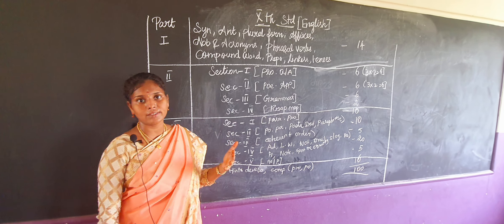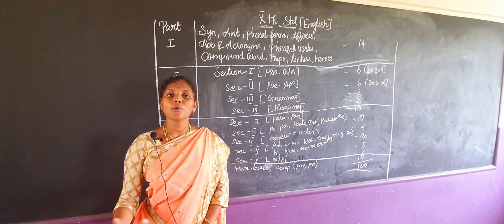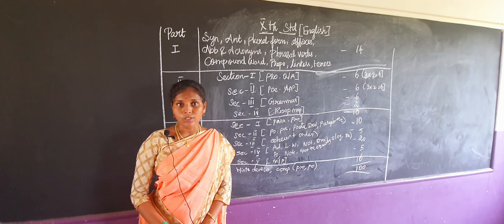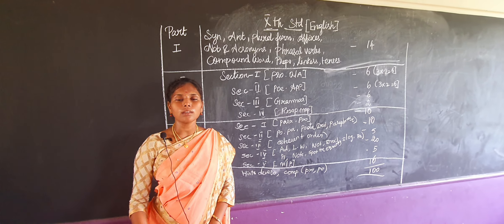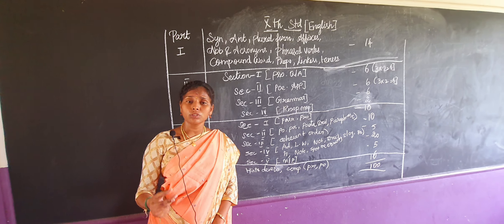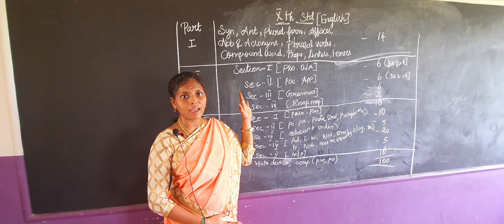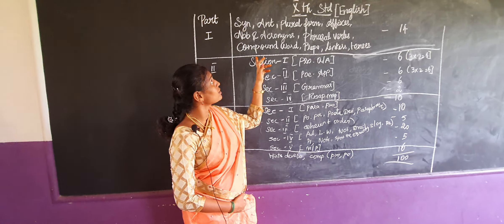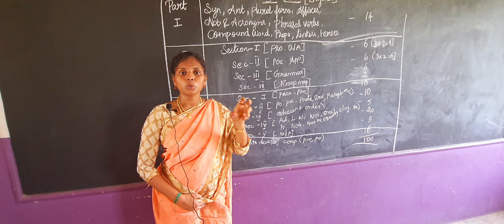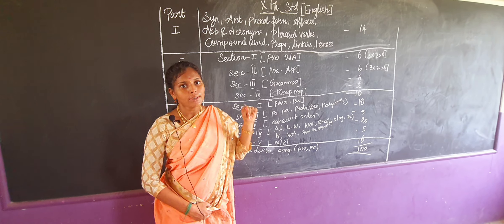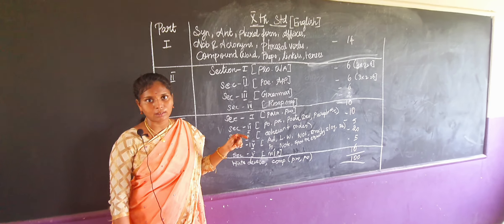For synonyms and antonyms, first you have to learn the glossary part. When you read the lesson and new words come in, find out the meaning with the help of a dictionary and learn the synonyms and antonyms. Don't worry — in Part 1, they will give you 14 questions with options, so you have to choose the apt answer and write. Concentrate on the glossary part as well as read the lesson.